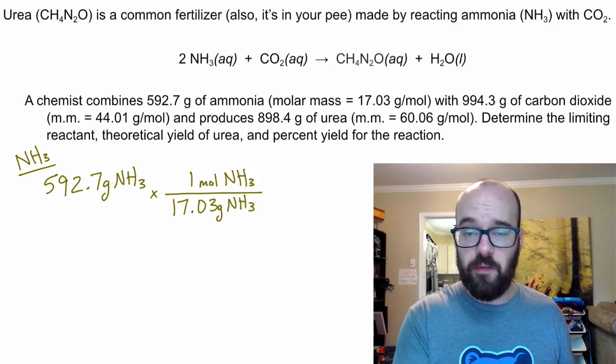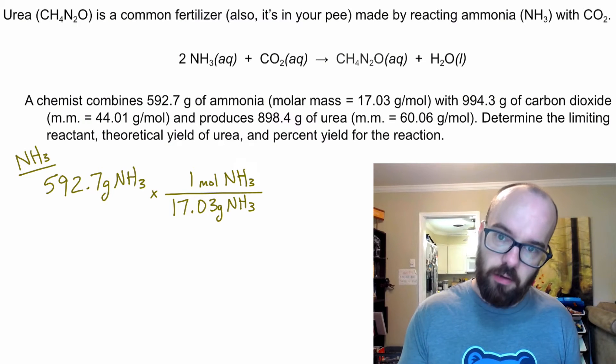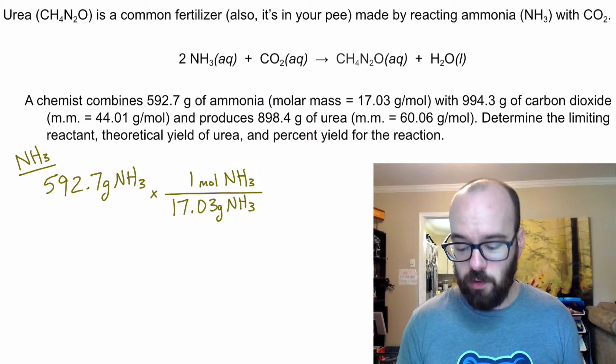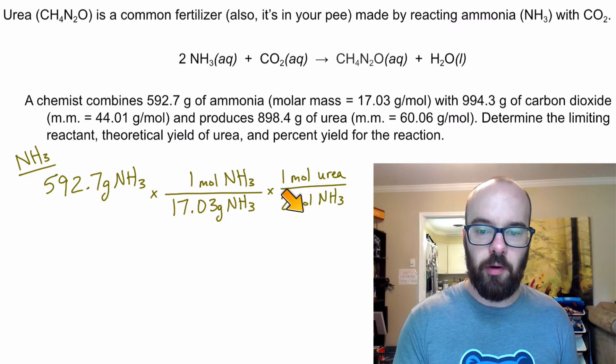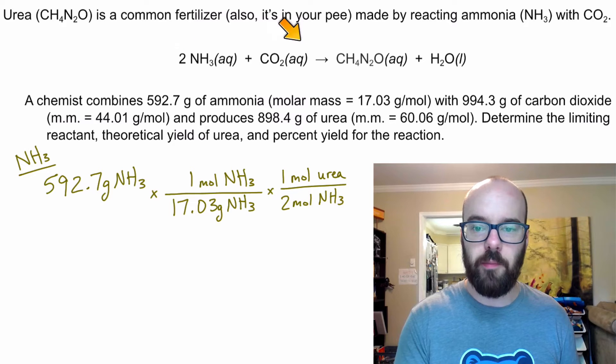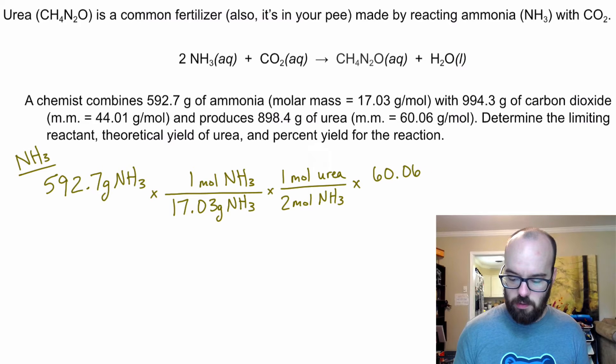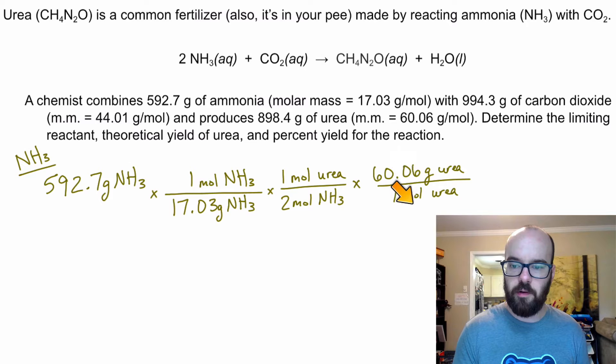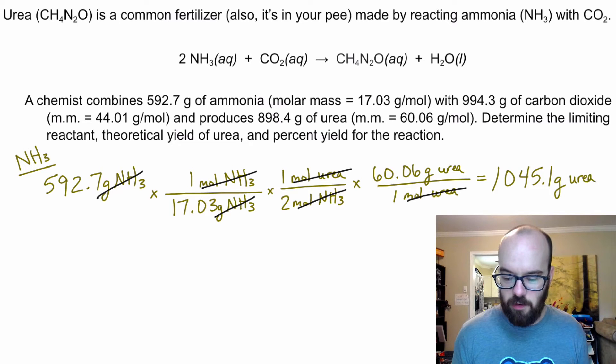As I'm doing this, in a previous video, we went through the stoichiometry map. If it's helpful to have that stoichiometry map out, have that out. I'm not going to use it in these problems, but it could be helpful if you need it. We've got two moles of ammonia for every one mole of urea. I get those from the coefficients. And then I need to convert to grams of urea. And I calculated we have 1,045.1 grams of urea.